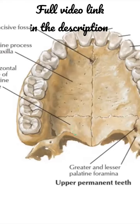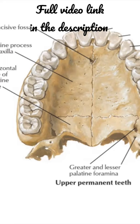The upper surface of the bony palate is covered by the ciliated columnar epithelium of the nasal cavity. The lower surface is lined by keratinized stratified squamous epithelium and is provided with numerous mucus-secreting palatine glands in the posterior half.